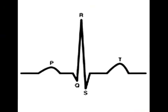EKG is mainly denoted by five important waves: P, Q, R, S, and T. P wave represents atrial depolarization, QRS represents ventricular depolarization, and T wave represents ventricular repolarization.